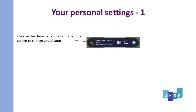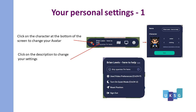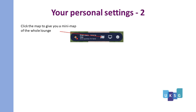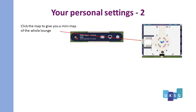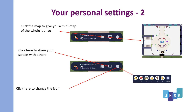If you click on the avatar character you can change the details of your avatar. You can click on the description to change your settings. If you click reset position it takes you back to the entrance if you find yourself lost. On your personal settings bar you can also click the map to give you a mini map of the whole lounge. You can click to share your screen with others you're in conversation with, and click to change the icon color.